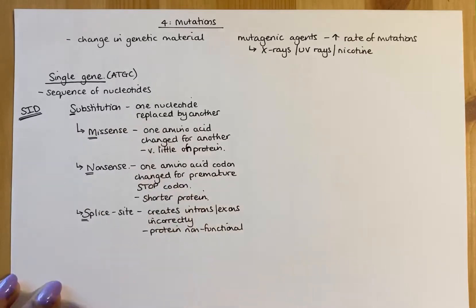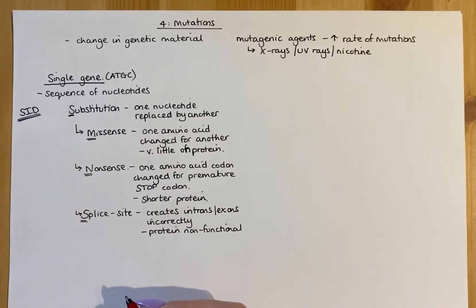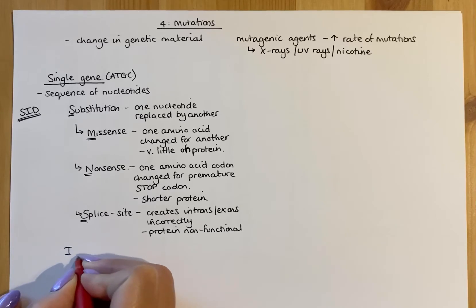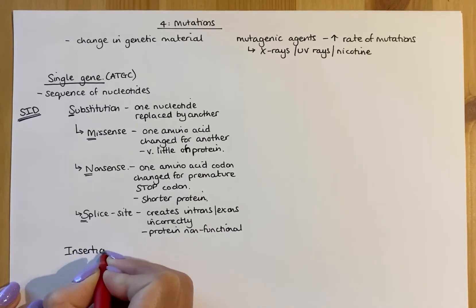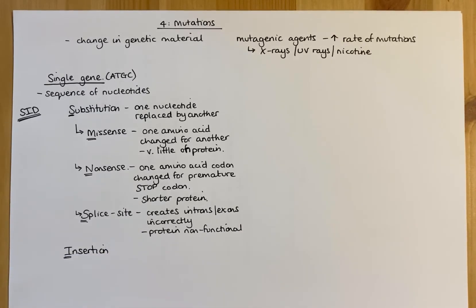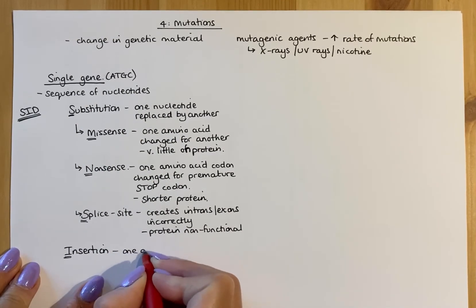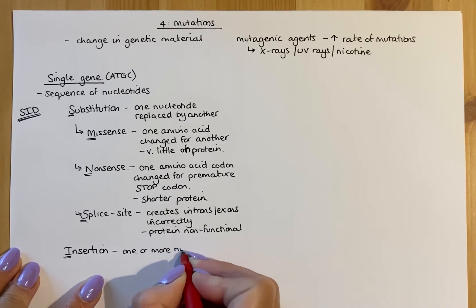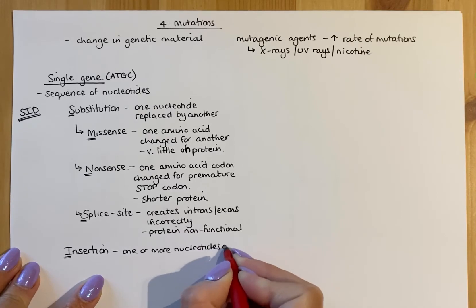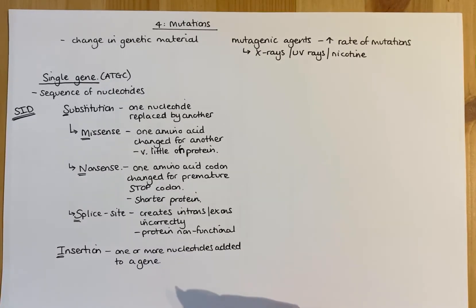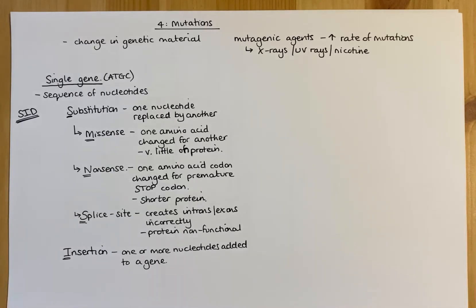That covers the S of SID. The remaining letters — I and D — are frameshift mutations. I stands for insertion, which is when one or more nucleotides are added to a gene. Because a nucleotide is added, every single nucleotide after the insertion point is shifted, changing all codons downstream since codons are read in groups of three.